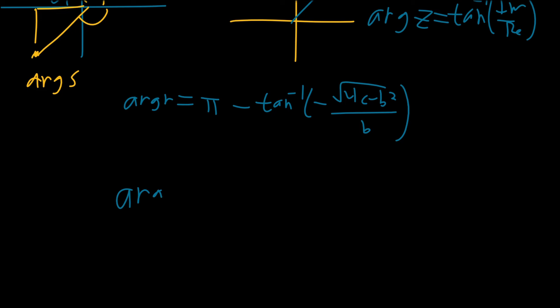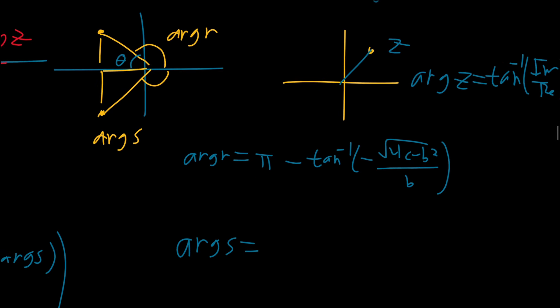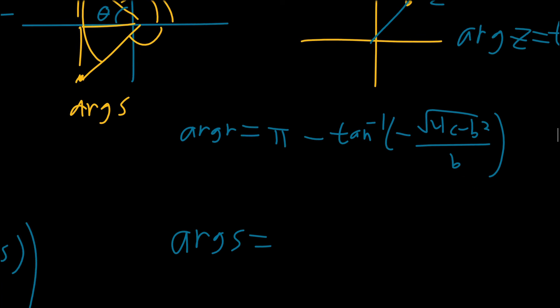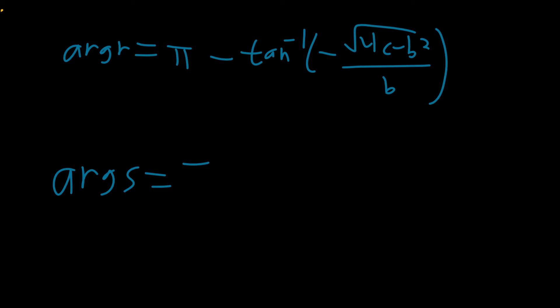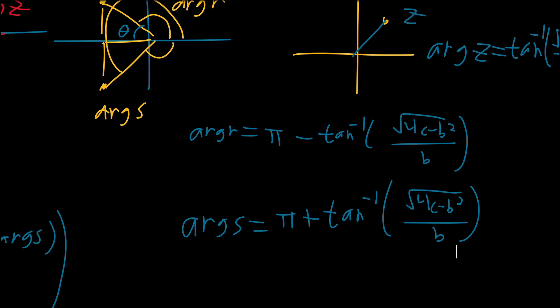For arg(s), since s is in the third quadrant and our branch cut gives θ ∈ (0, 2π), we measure the full angle going around, giving arg(s) = π + arctan(√(4c - b²) / b).